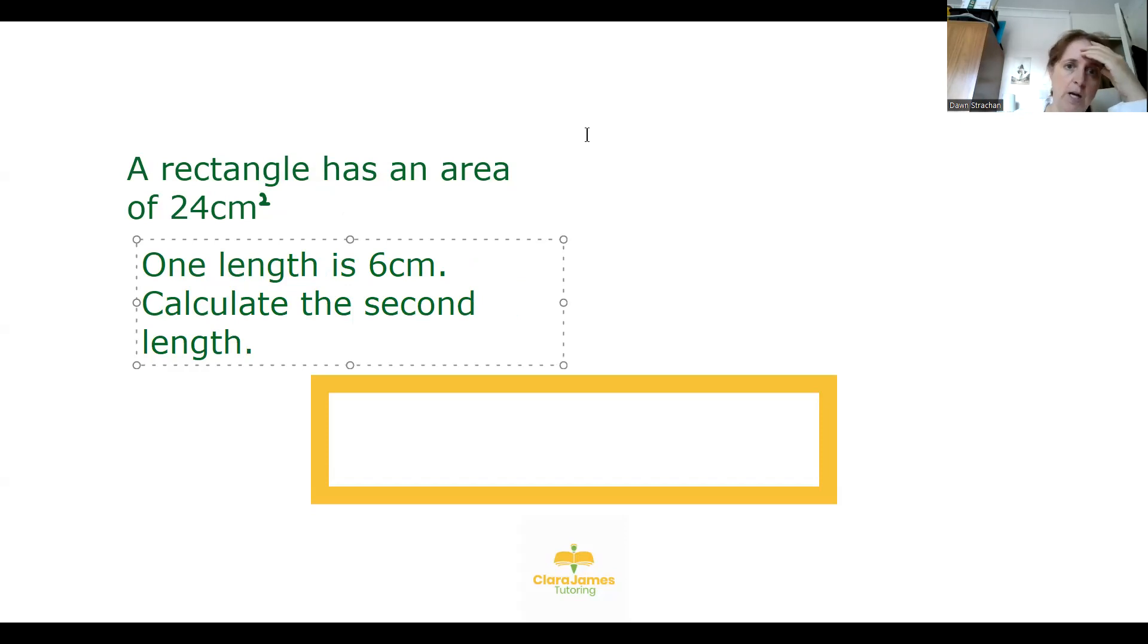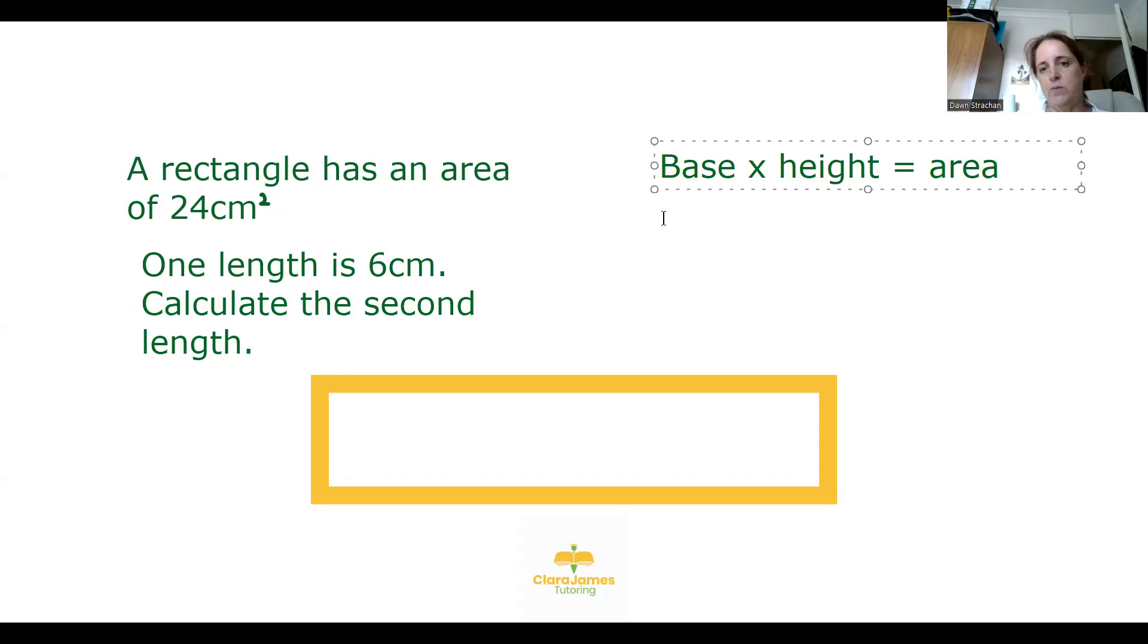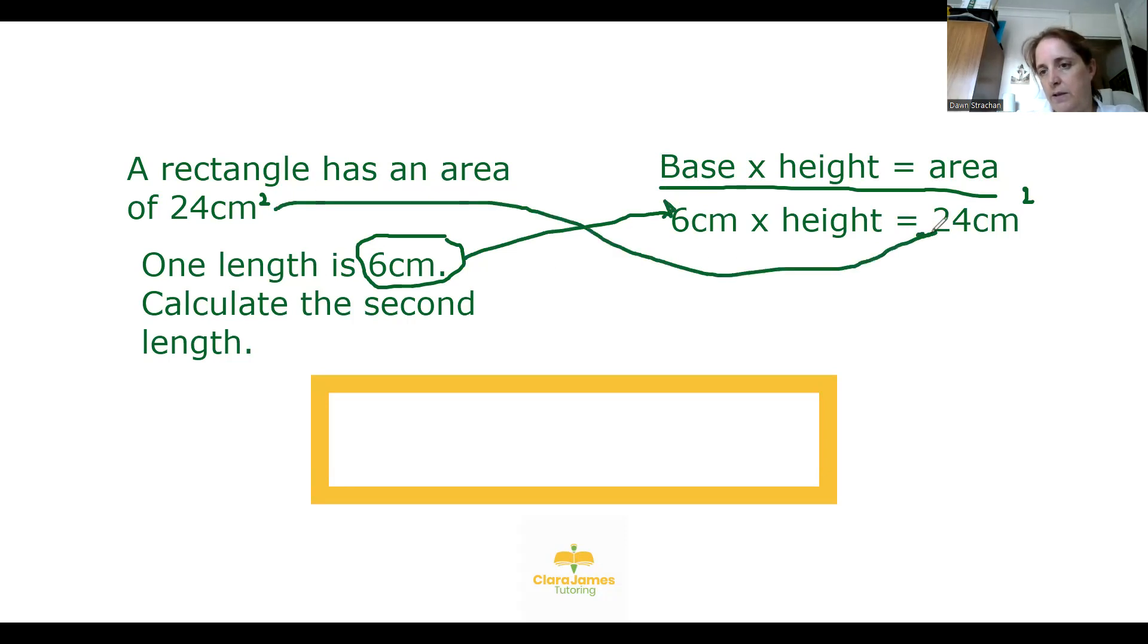So what we already know is that base times height equals area. So if we say that the base is 6 centimeters, so 6 centimeters times the height equals 24 centimeters squared. So all I've done there is taken our formula base times height equals area and then I've substituted in the 6 from here and the area from here.